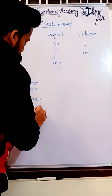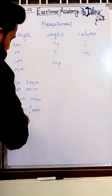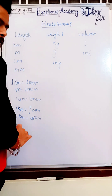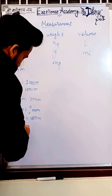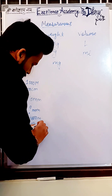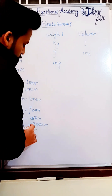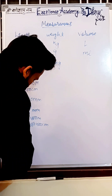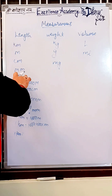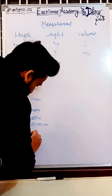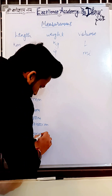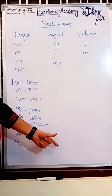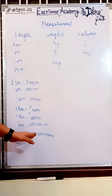One kilometer equals 1000 meters. Now to change meter into centimeter, we multiply by 100, so we write centimeter here because we have changed meter into centimeter. Now we are going to change centimeter into millimeter — we know one centimeter equals 10 millimeters, so we multiply by 10.